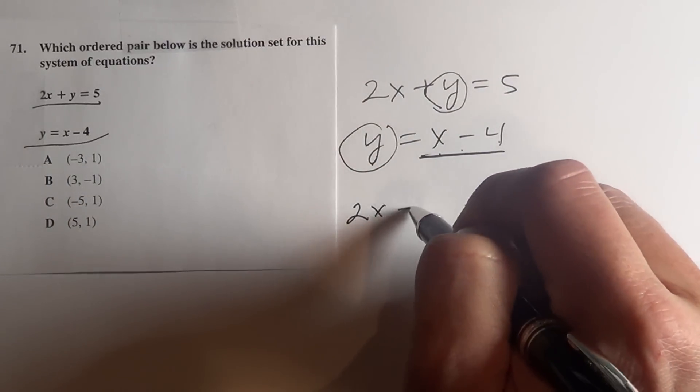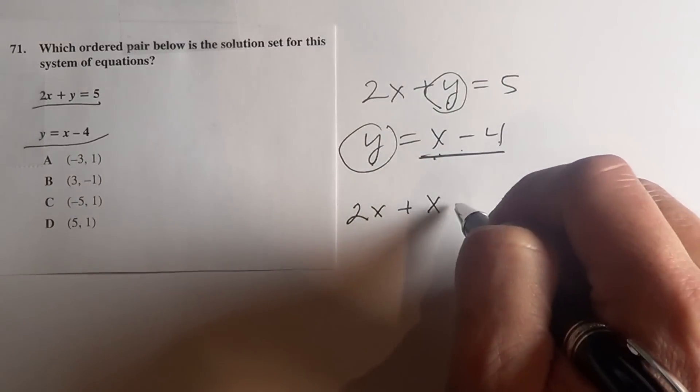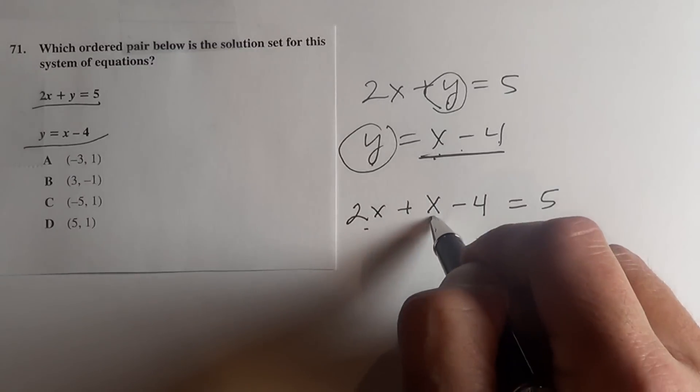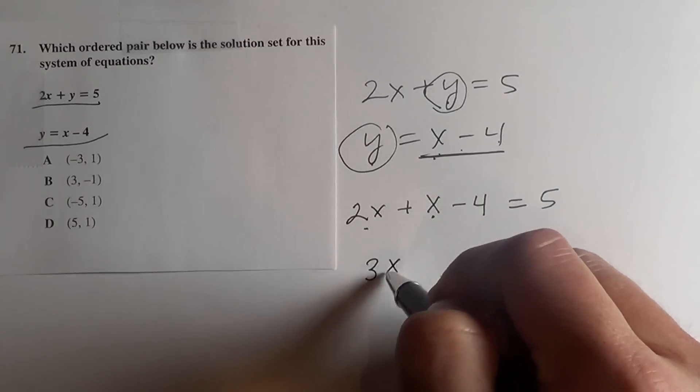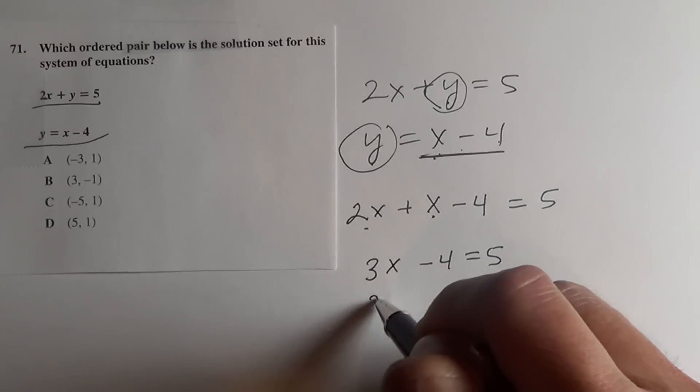So I'm going to rewrite it: 2x plus, instead of writing y, I'm going to substitute x minus 4 equals 5. 2x plus 1x is 3x, minus 4 equals 5.